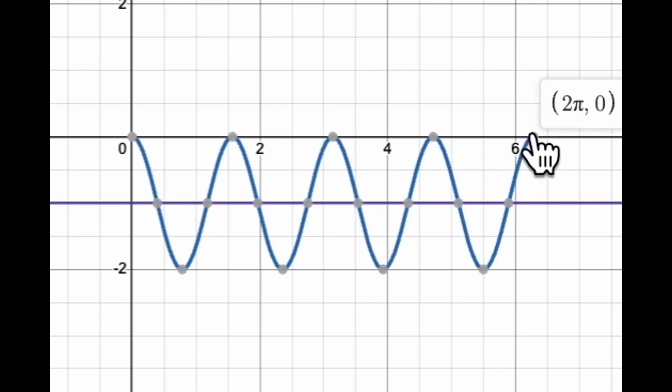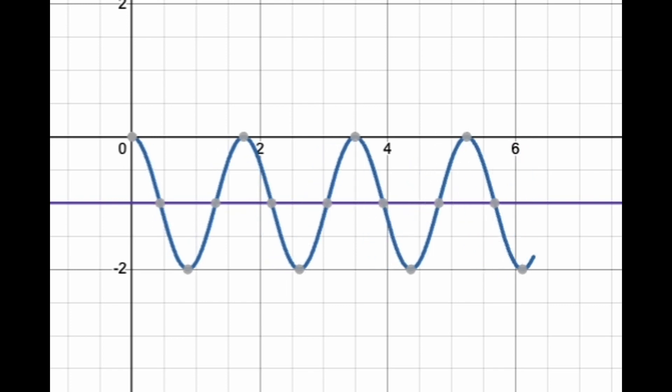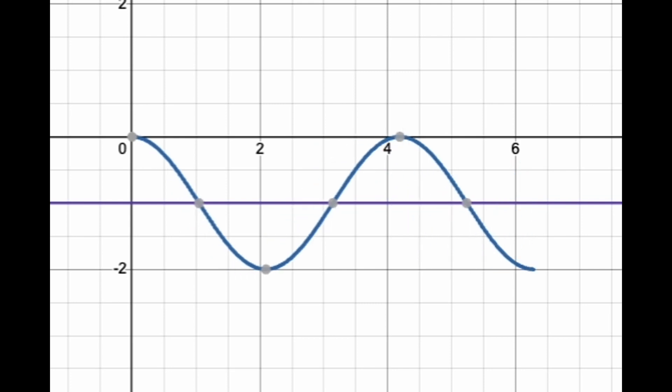That's not the one we want. So which means ω cannot be too big, and it cannot be too small either. If it's smaller than 1, you're going to have less than 3 roots here. This is 1, this is less than 1.